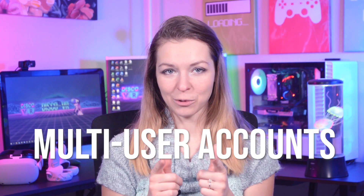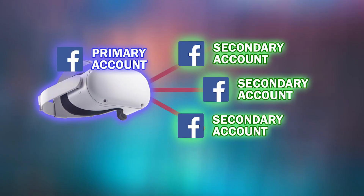So let's start with the basics: multi-user accounts. What does it mean? It means that multiple accounts — specifically three additional secondary accounts — can be logged into the same VR set. So one primary account and up to three secondary Facebook accounts. And that's pretty cool because now each account can retain their own scores, leaderboards, friends lists, and of course their own names and avatars on separate accounts, even if you own only one Quest 2 VR set.